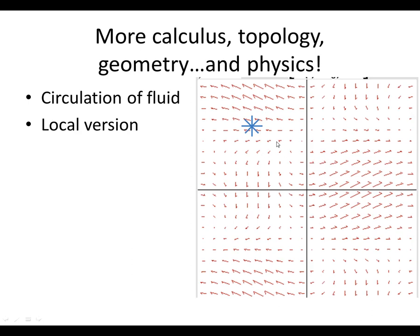Here's what you could call a local version of the same idea. Instead of putting a big loop, I'm just going to focus on one point. The usual model is to put a little water wheel here with a vertical axis — vertical meaning into or out of the screen, since we're looking down on a table of fluid. The water wheel can either turn counterclockwise or clockwise. Why would it turn one way or the other? The arrows on the top side are a bit stronger than the arrows on the bottom side, so I predict it's going to have a tendency to go counterclockwise. We assign a number here: there's a tendency to go counterclockwise — usually mathematicians call that positive.